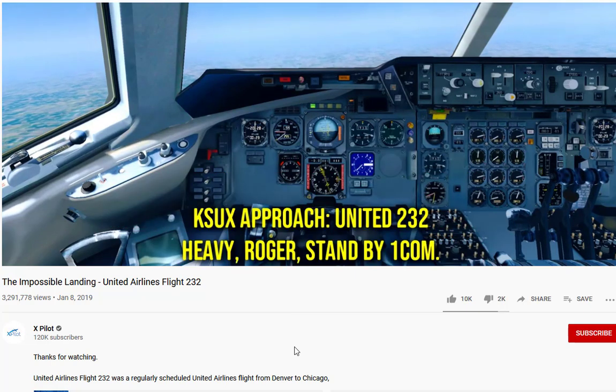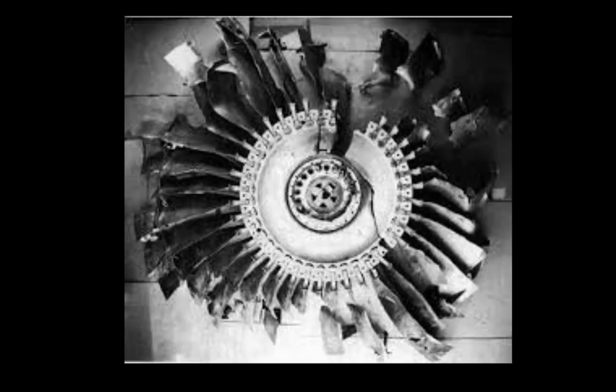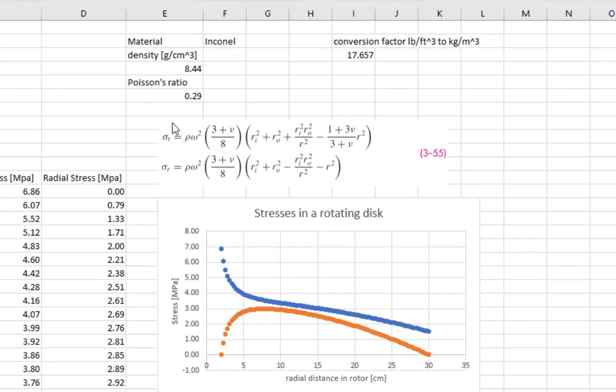United 232 heavy roger, standby one. The inertial forces of rotation can cause the disc to tear itself apart. The equations that are used to determine the hoop or tangential and radial stresses are given right here in equation 355.